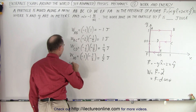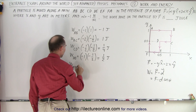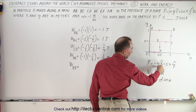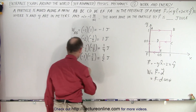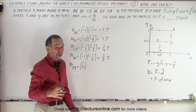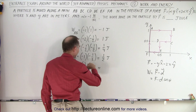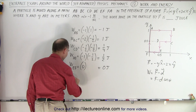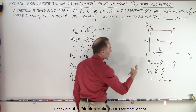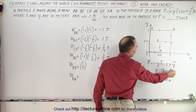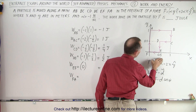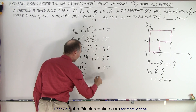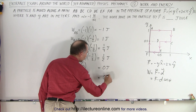Traveling from E to F, we move in the X direction so only the X component is valid. Y is equal to 0 here, so the force is 0 — meaning 0 joules of work done. Then from F back to A, we travel in the Y direction. X is equal to 0 there, so again the force is 0 and the work done is 0 joules.